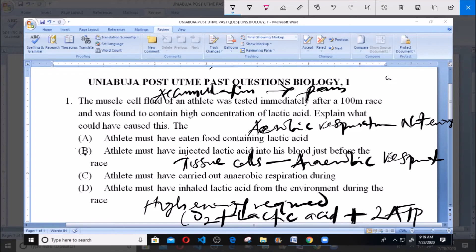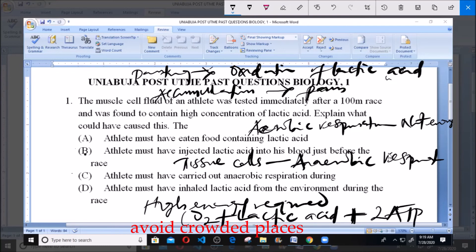After the athlete is done running, he begins to breathe very fast. This fast breathing or panting is due to oxidation of the lactic acid. The lactic acid is converted back to glucose when the athlete stops running. The oxygen required is very much, so the athlete has to breathe very fast in order to provide enough oxygen for the oxidation of the lactic acid.